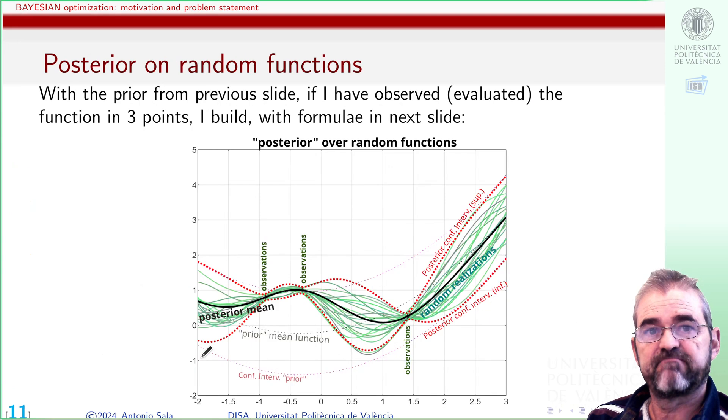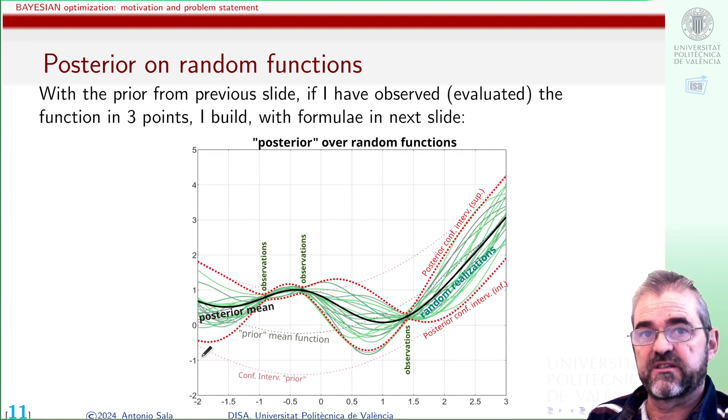But of course, details on all this would fill a whole course in Gaussian process for machine learning, which is not the goal of this series of short introductory videos. This introductory outline on what Bayesian optimization is will finish in the next video in which we will discuss which are the most sensible use cases for these Bayesian optimization techniques and we will give some last remarks on Bayesian versus deterministic methods.